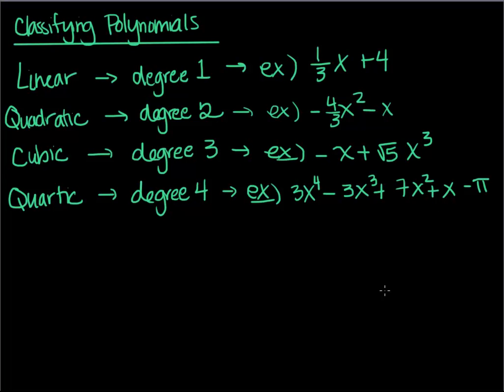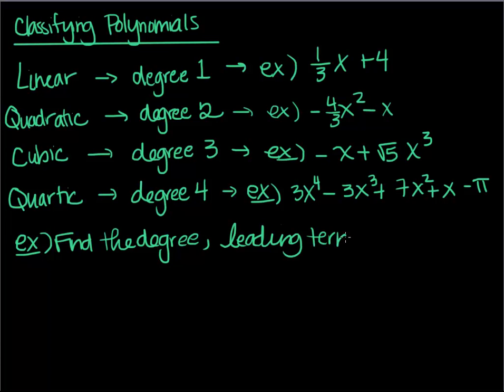So there's some examples that's classifying. I think a degree five polynomial is like kintic or quintic or something. And then I'm not sure after that what they call them. We just call them degree, a polynomial of degree six or degree four. So let's do an example here. Find the degree, leading term, and leading coefficient.